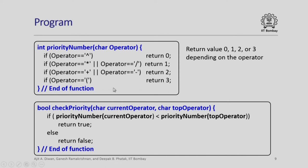We also need to check priority when implementing the infix to postfix conversion, by comparing the current operator with the operator on top of the stack. The check_priority function has two parameters: it calculates the priority number for the current operator and for the top operator. If the current operator has a lower priority value than the top operator — meaning it is of higher precedence — it returns true, otherwise it returns false. So check_priority returns true if the priority of the current operator is higher than the priority of the operator on the stack.